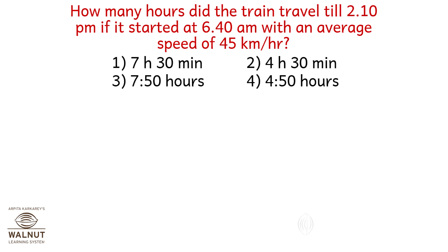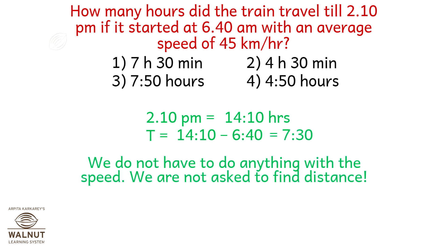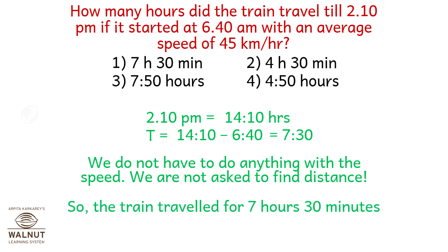How many hours did the train travel till 2.10 p.m. if it started at 6.40 a.m. with an average speed of 45 kilometers per hour? 2.10 p.m. is 14.10 hours in 24-hour format. The time taken is 14.10 minus 6.40, which is 7 hours 30 minutes. We are not asked to find the distance, so the train travelled for 7 hours and 30 minutes — option number 1.